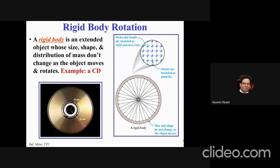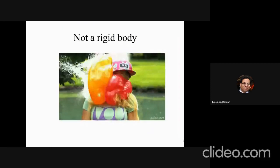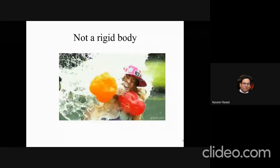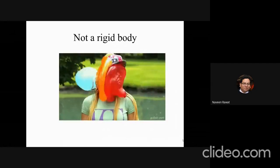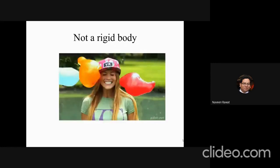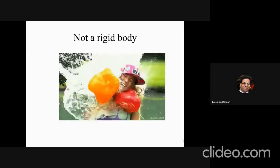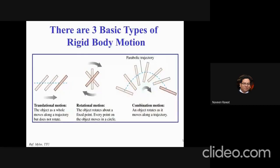For example, you have a CD drive — it is a rigid body and it is rotating without changing shape. Compare this to a balloon filled with water: if you toss it, you can see the shape of the balloon changes depending on gravitational force and air resistance. So a water-filled balloon is an example of a non-rigid body, which is what we mean when we distinguish rigid from non-rigid bodies.